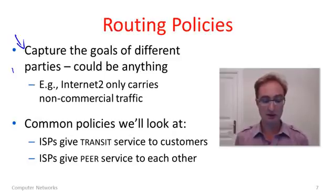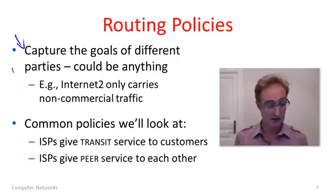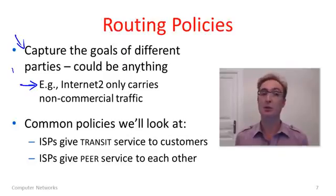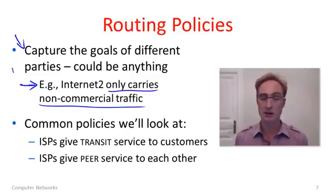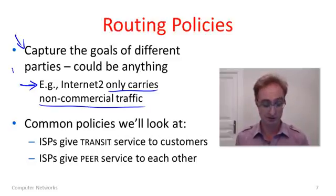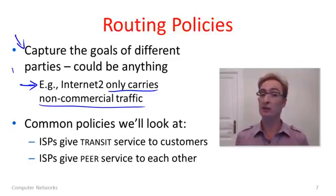Policies capture the goals of the different parties. Policies is a general and abstract word because policies could actually be anything. Here's an example of a real policy: Internet 2 is a research and education network in the United States that connects universities. One of its policies is that it will only carry non-commercial traffic — it'll carry traffic between educational institutions like UW to MIT, but not to commercial networks like Google. That's its acceptable use policy and a condition of its funding, so routes are computed to comply with this.